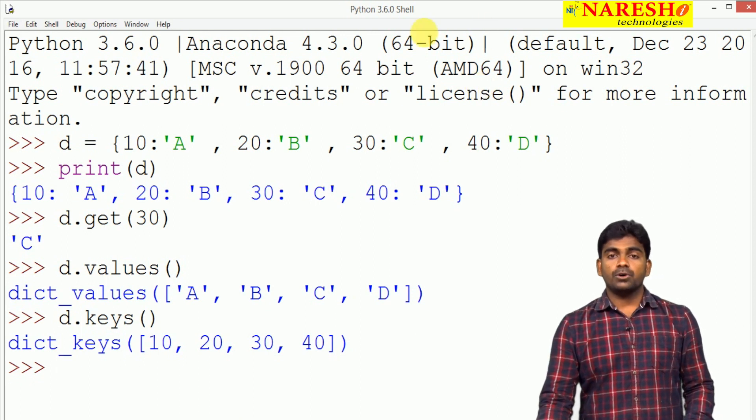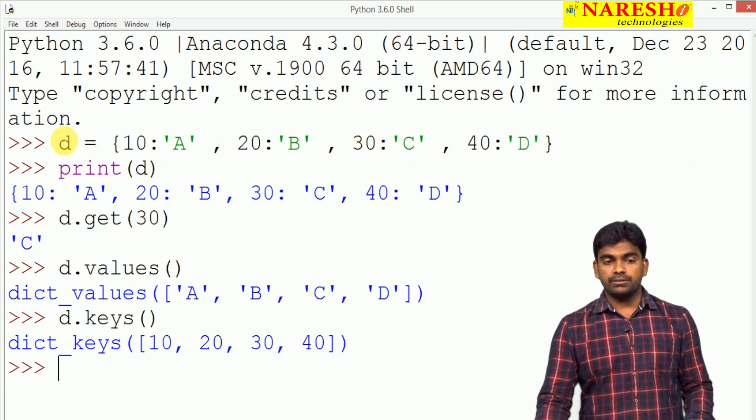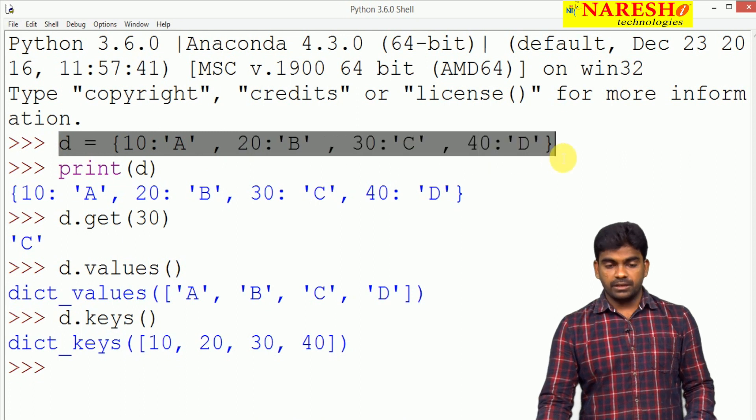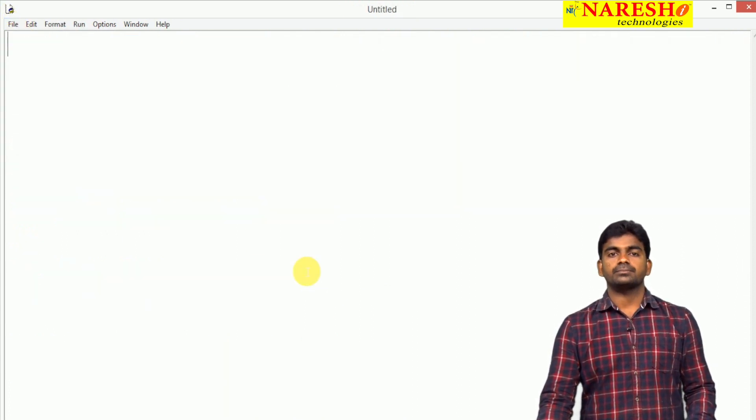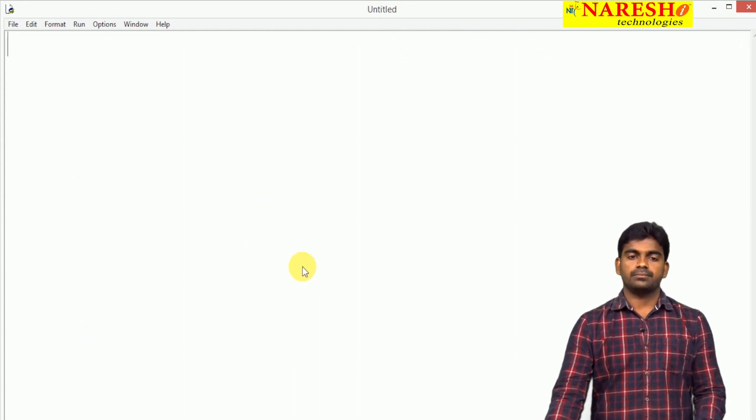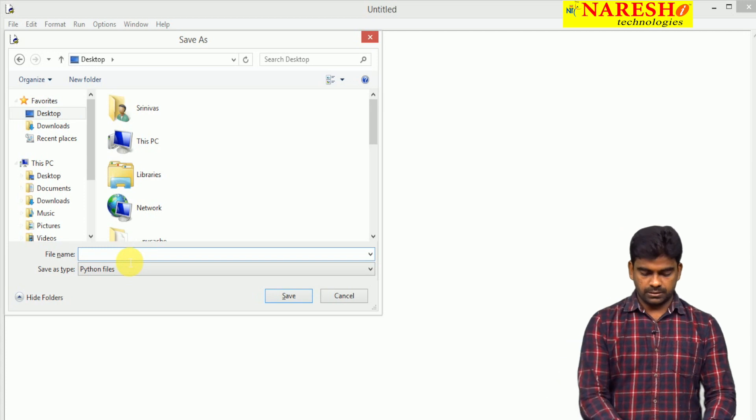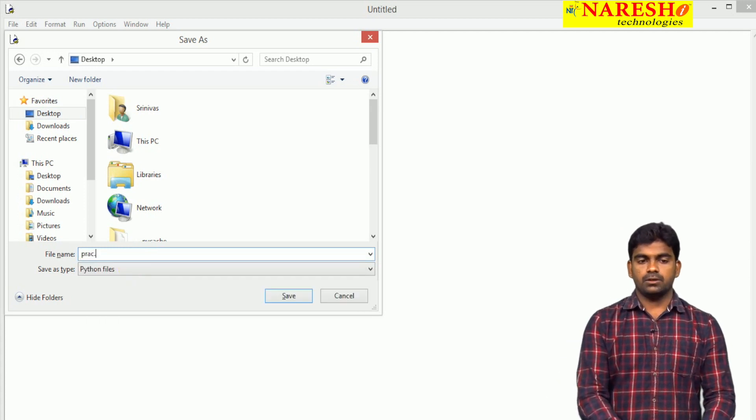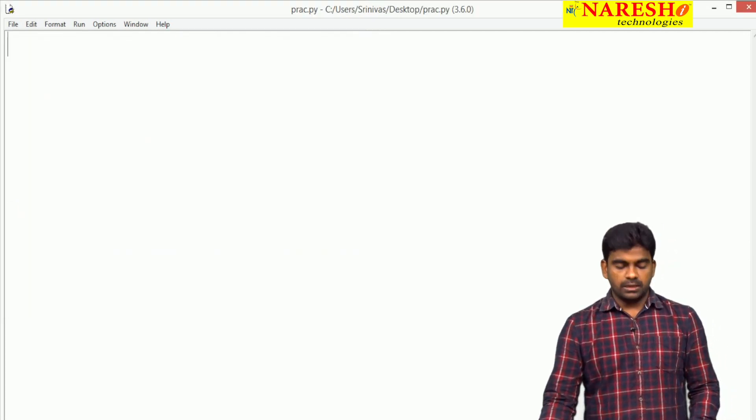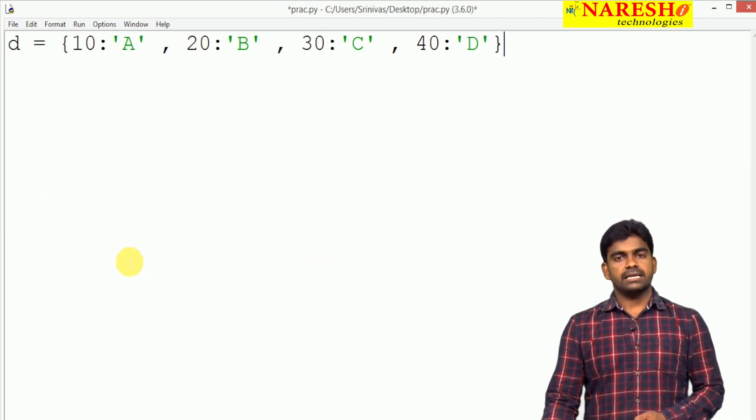Now for example I just want to display using loop. Here we are creating, we are taking one file. I am saving it with any name on any location, just practice.py. In that we are creating, we are writing the same dictionary.